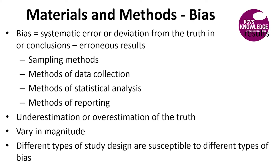Bias can creep in across different areas of study design: in sampling methods, data collection, statistical analysis, and reporting. Any bias in any of these areas will result in either an underestimation or overestimation of the actual truth. It varies in magnitude depending on the type of bias. Remember also that different types of study design are susceptible to different types of bias — which is why it's important to understand what the study design is.